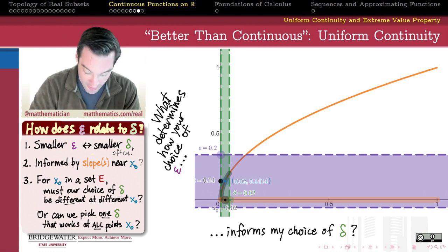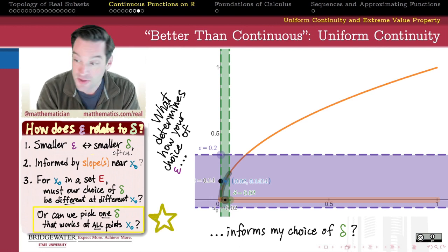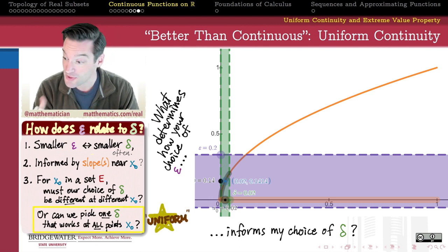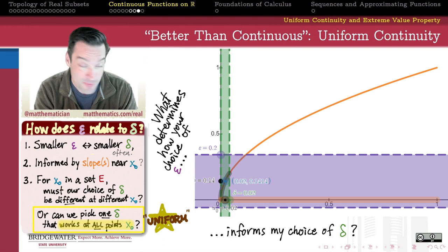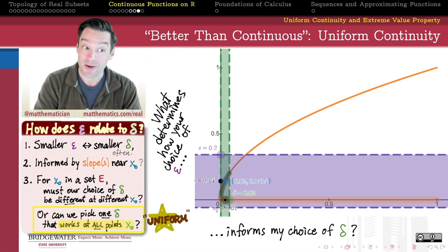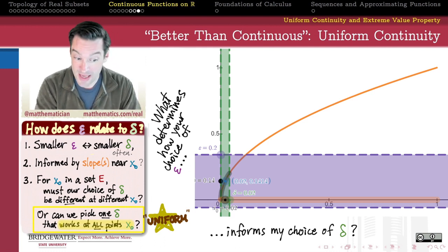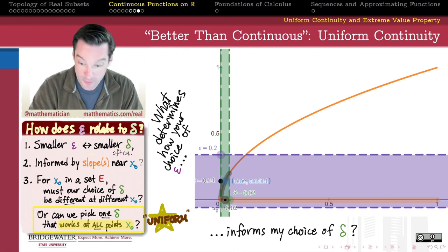And so this is the kind of special type of continuous function that we're going to want to be interested in over the next couple of videos. We call this kind of continuity uniform continuity. So this is an example of a function which we will say is uniformly continuous.